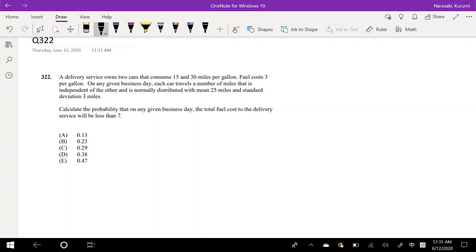The delivery service owns two cars that consume 15 and 30 miles per gallon. So I'm going to assign the variable x to the first car, 15 miles per gallon, and I'm going to assign y to the second car that goes 30 miles per gallon. Fuel costs $3 per gallon.